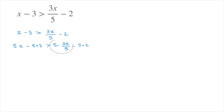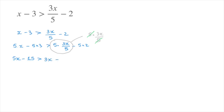Focusing on this fraction for a second: when we have 5 times 3x over 5, the 5 that's multiplying the 3x will cancel out with the 5 that's dividing it. So we can cross out these two 5s and we'll be left with 3x. Our inequality becomes 5x minus 15 greater than 3x minus 10, and this does seem a little friendlier.